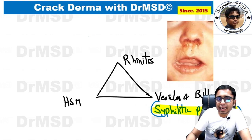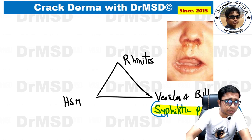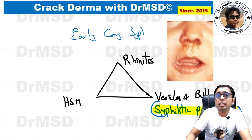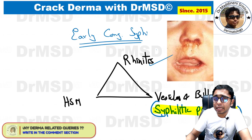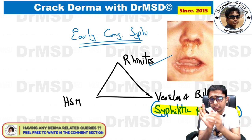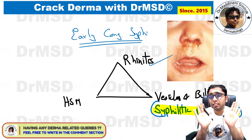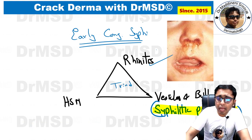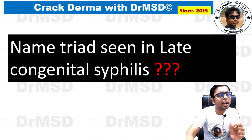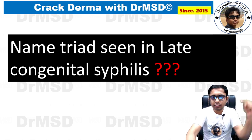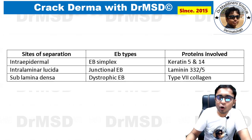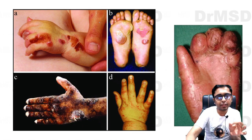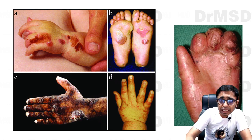For your reference, in early congenital syphilis the triad consists of rhinitis, hepatosplenomegaly, and syphilitic pemphigus (vesicobullous lesions over the palms and soles). What is the name of the triad seen in late congenital syphilis? Please leave your answer in the comment section. The slide also shows all the types of epidermolysis bullosa for quick revision.